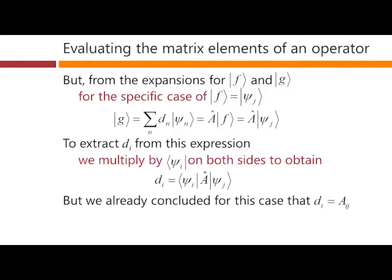But we already concluded for this case that di was equal to aij, so therefore aij, this matrix element, is ⟨ψi|A|ψj⟩. So we figured out how to evaluate this matrix element of this operator on this ψ basis.